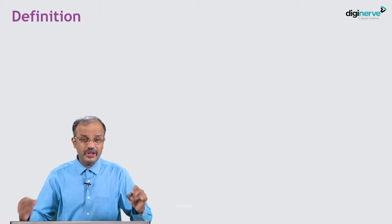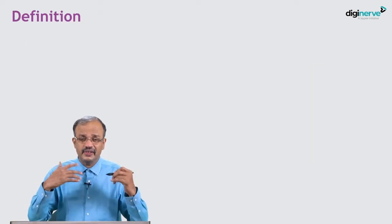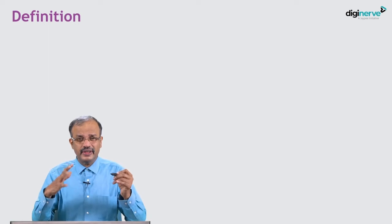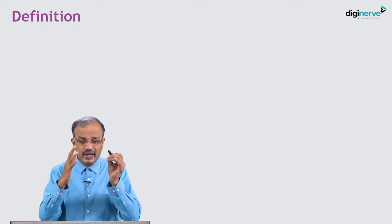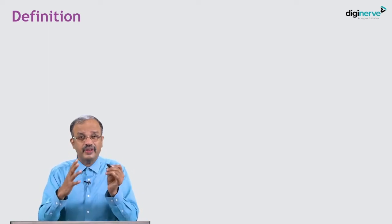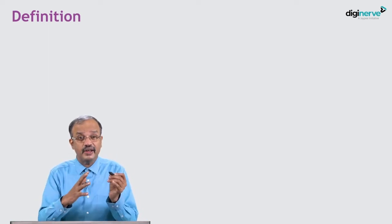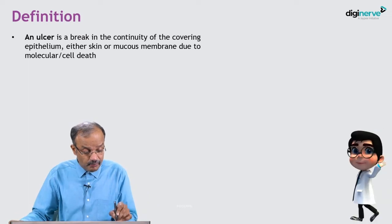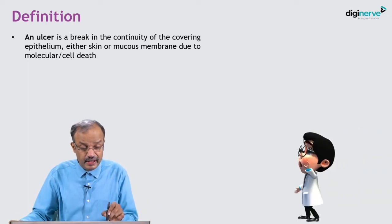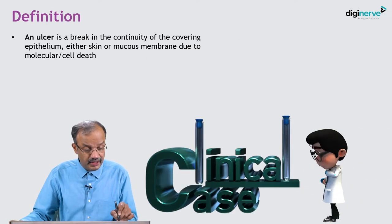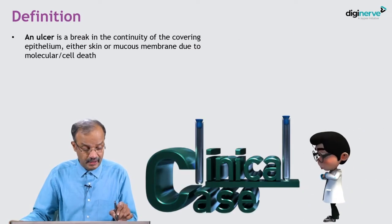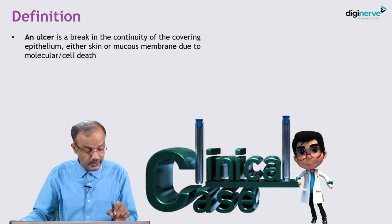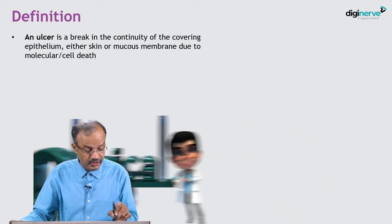What is the definition of ulcer? There is a technical meaning and a clinical meaning. An ulcer is a break in the continuity of the covering epithelium - either skin or mucous membrane - due to molecular death.